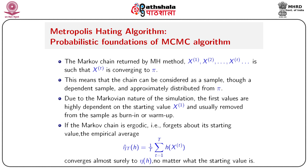The Markov chain returned by the MH method, say x1, x2, ..., xT, is such that xT converges to pi. This means the chain can be considered as a dependent sample approximately distributed from pi. Due to the Markovian nature of simulation, the first values are highly dependent on the starting value x1 and are usually removed from the sample as burn-in or warm-up. If the Markov chain is ergodic, the empirical average eta-T-hat = (1/T) * sum_{t=1}^{T} h(xt) converges almost surely to eta_h, no matter what the starting value is.